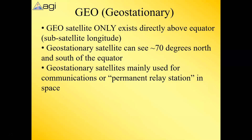Geostationary and geosynchronous satellites can only view plus or minus 70 degrees latitude, which is quite a bit compared to something like the space station. When something is so close to earth, you don't get a large swath of coverage. That's one big benefit of a geosynchronous satellite. One of their main purposes is to act as communication satellites — whether for TV, telephone, or as relay stations for other satellites.